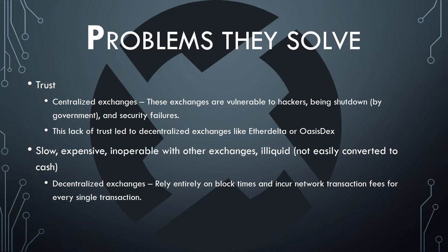What problems is 0x trying to solve? First is trust. Centralized exchanges have huge issues with this — they're vulnerable to hackers, being shut down by the government, and security failures. Mt. Gox is an example that affected the cryptocurrency space tremendously. This lack of trust led to decentralized exchanges such as Ether Delta or Oasis DEX.